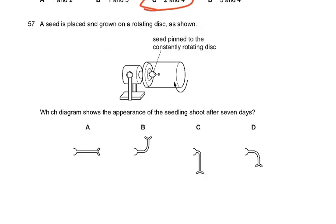A seed is placed on a constantly rotating disc. Because the disc rotates, all sides of the seedling are equally affected by gravity. Therefore the seedling will grow straight — it will not bend. If the disc were stationary, the root would grow downward. Because of the rotating disc, gravity acts equally on all sides, so no directional bending occurs.